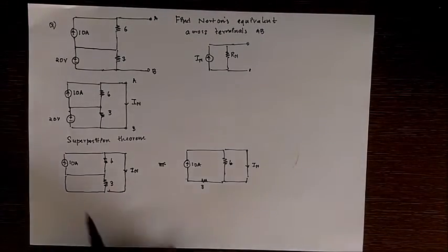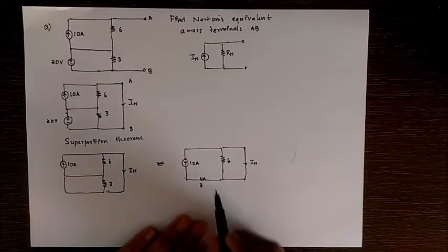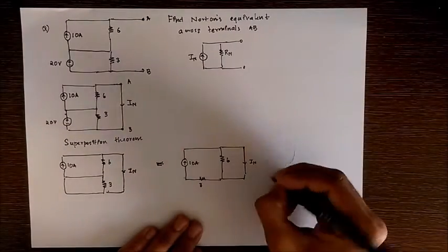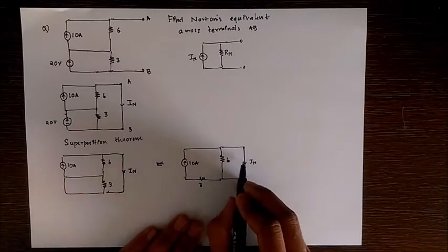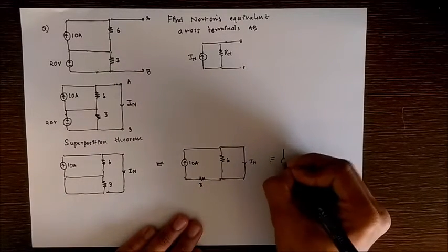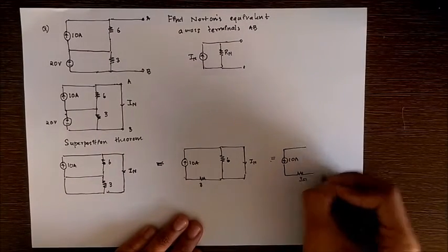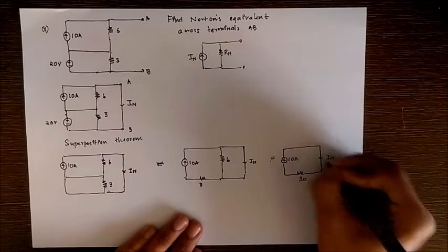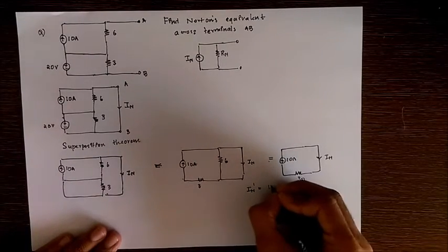On activating the 10A current source and short circuiting the 20V voltage source, I obtained a circuit like this which I simplified. Here this current In will only prefer the short circuit or zero resistance path. So this circuit is same as 10A, 3 Ohm. So this current In is directly 10A. So In' is 10A.